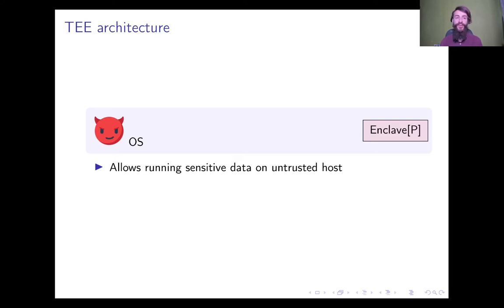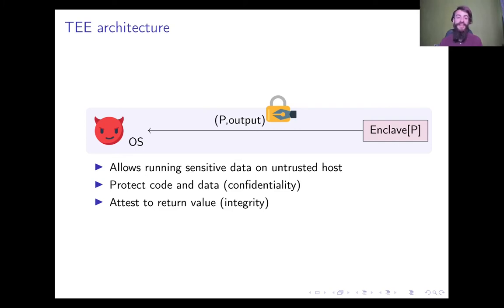Let's look at the architecture of trusted execution environments in a bit more detail. A TEE allows a host machine to instantiate one or more enclaves, each of which is running a program P, where the contents of the enclaves are kept secure from other processes running on a machine, including an adversarial operating system. In particular, an enclave provides confidentiality, as the host is not able to observe the behavior of the enclave in terms of its code, nor the data it's accessing.